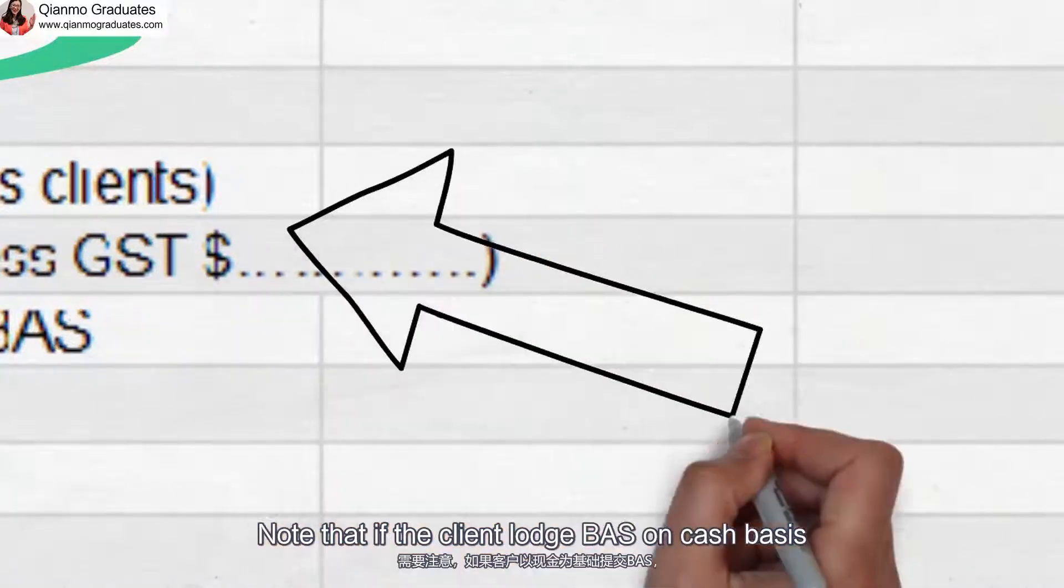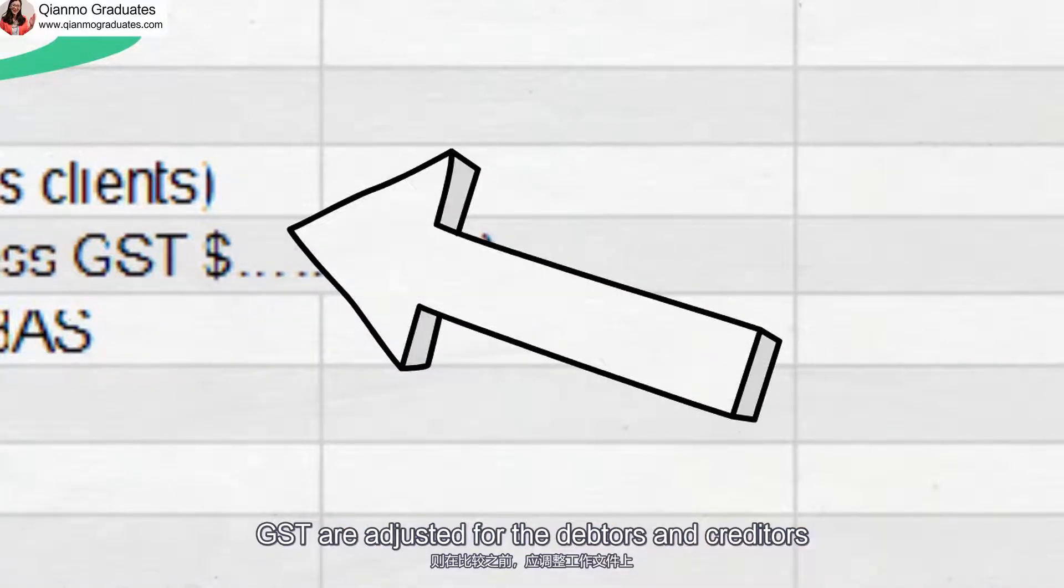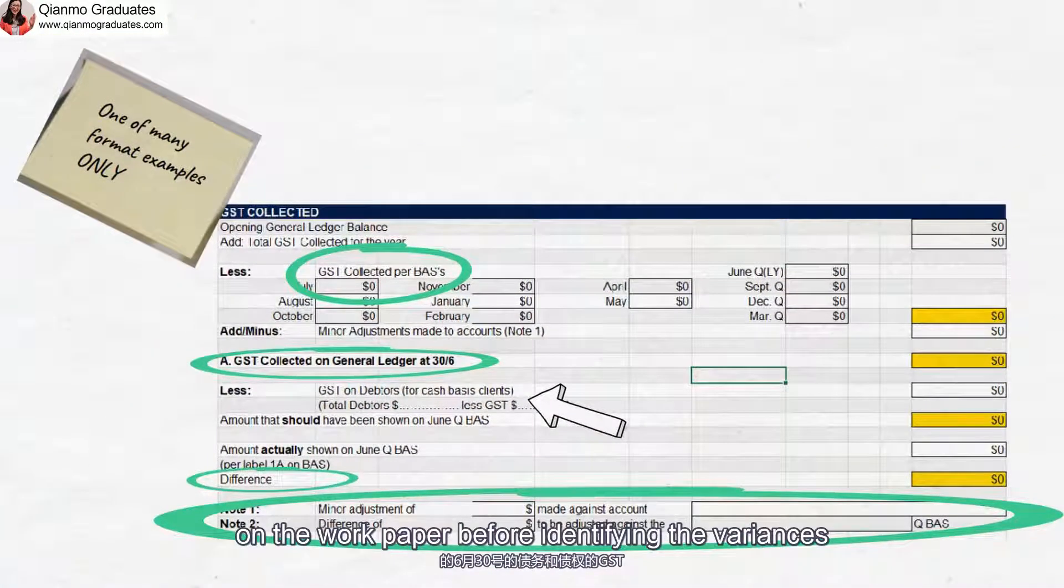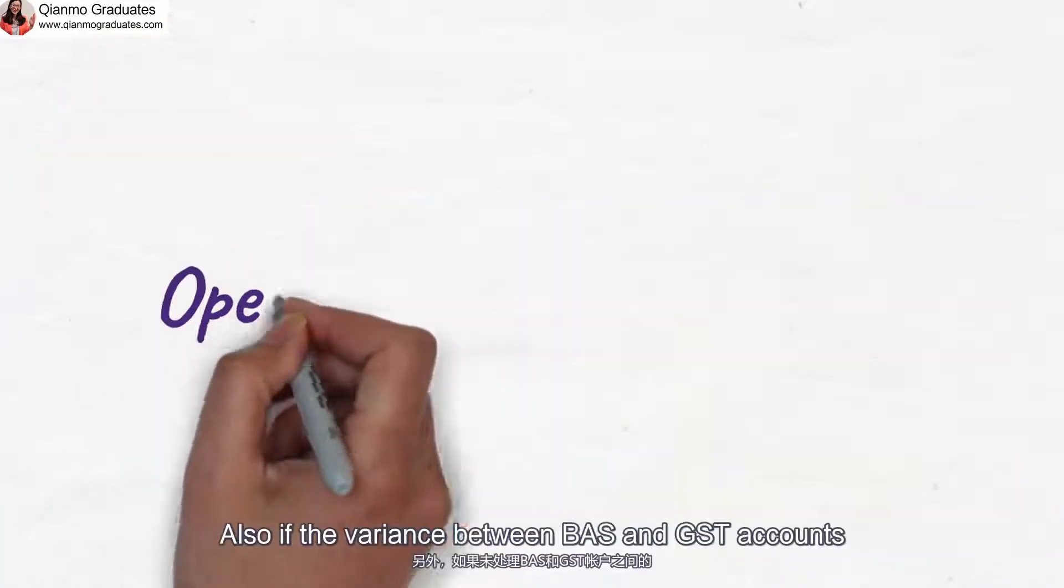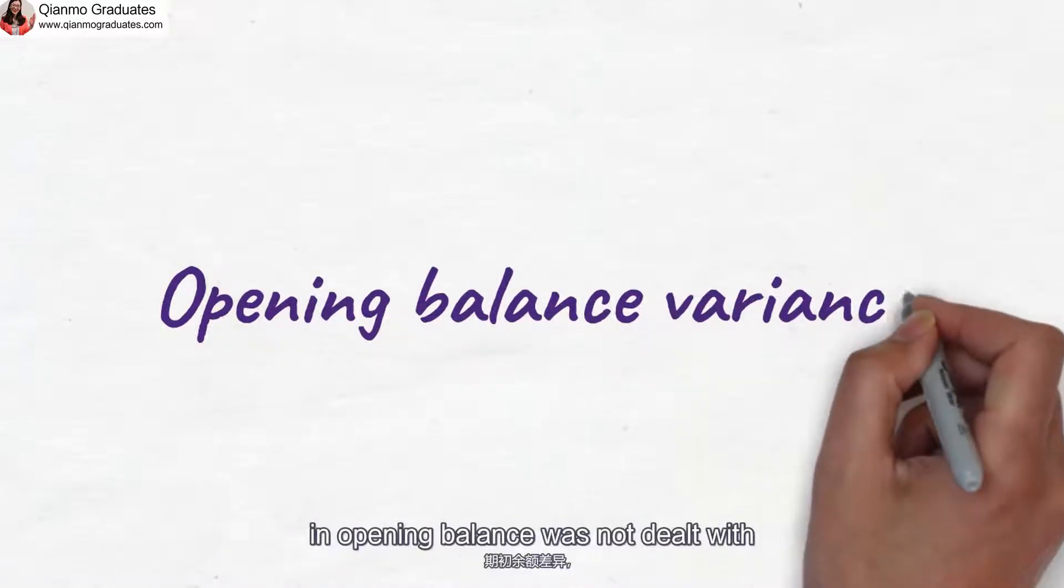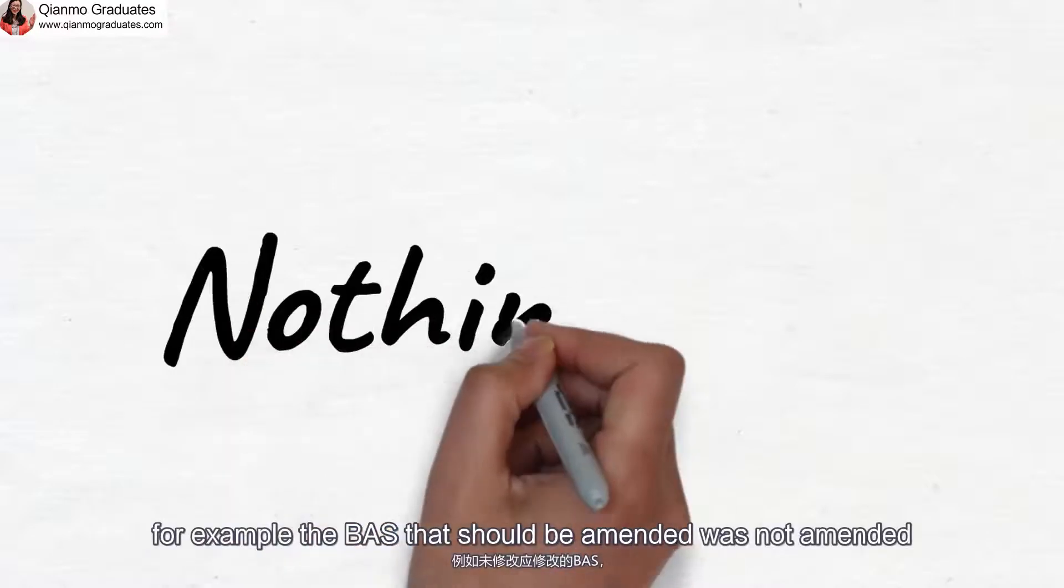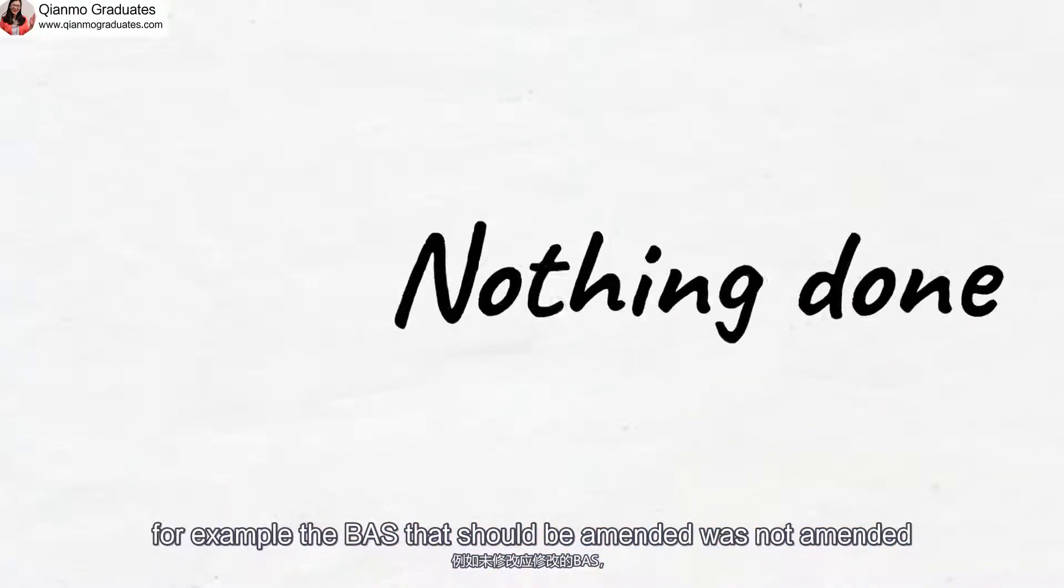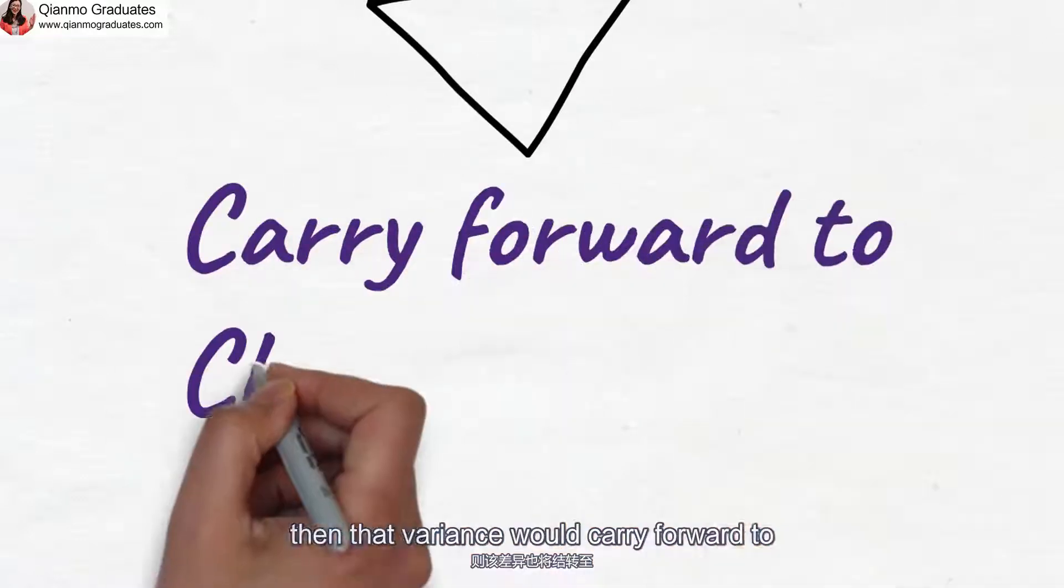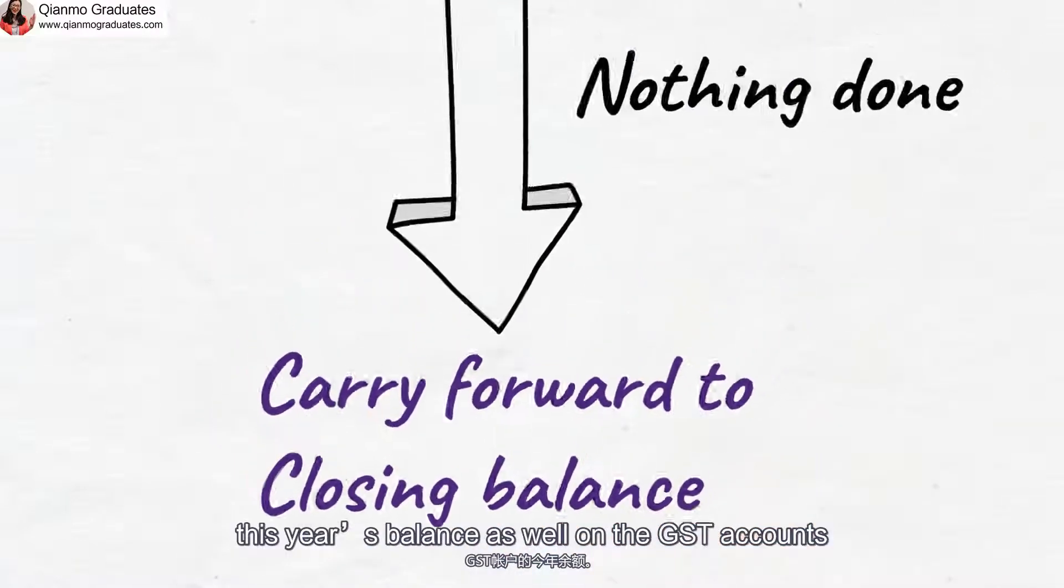Note that if the client lodged BATS on cash basis, GST are adjusted for debtors and creditors on the workpaper before identifying the variances. Also, if the variance between the BATS and GST accounts in opening balance was not dealt with, for example, the BATS that should be amended was not amended, then that variance would carry forward to this year's balance as well on the GST accounts.